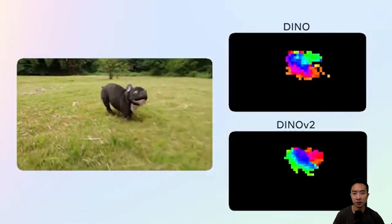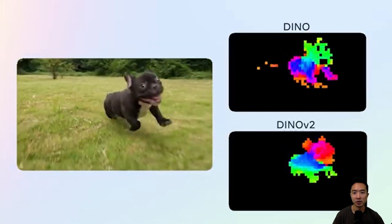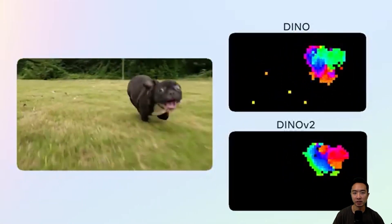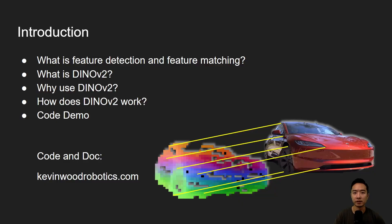We can now detect features in almost any images using DINOv2. In this video, I will talk about what is feature detection and feature matching, go over DINOv2, why use it, how it works, and jump into a code demo where we'll see how we do feature matching with a Tesla, as well as many other examples. Code and documentation will be available on my website at kevinwoodrobotics.com.